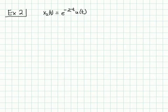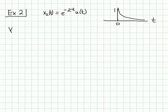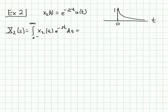Before starting a transform, it's always helpful to have a sketch of the signal. x2(t) is a decaying exponential — the u(t) means it starts at 0. At t=0 it equals 1, because e^0 equals 1, and then it's a decaying real exponential going off to positive infinity. It's 0 before 0 and a decaying exponential after 0. So x2(s) is the integral from 0-minus to infinity of e^{-2t} e^{-st} dt.